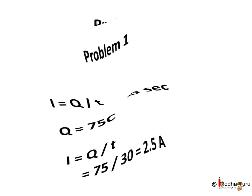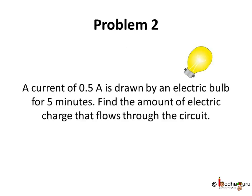Let us take another problem. A current of 0.5 amp is drawn by an electric bulb for 5 minutes. Find the amount of electric charge that flows through the circuit.